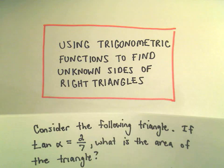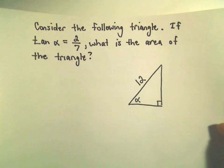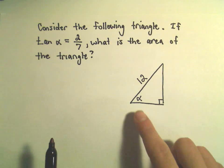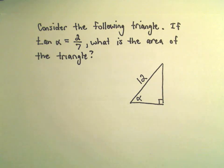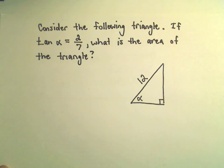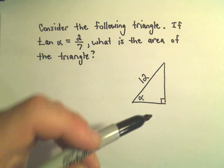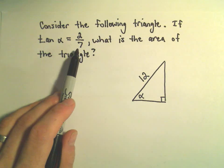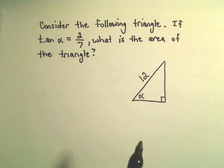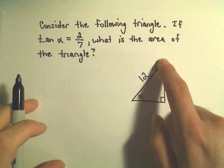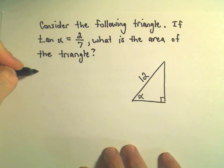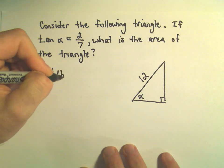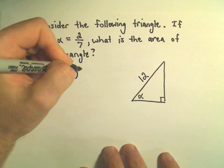All right, in this video we're going to do an example of using a known trig value to help us figure out the lengths of the missing sides of our triangle. So in this case we've got a right triangle here that has hypotenuse 12. We know that tangent of alpha is given by the value of 2 over 7, and we want to know what's the area of the triangle. So remember the area of a triangle is just 1 half times its base times its height.